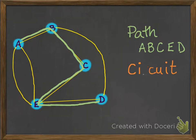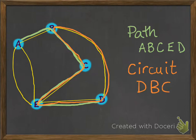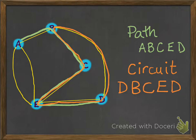We could also have a circuit, which is a path that is closed — it makes a loop. For example, this one here is a circuit: D, B, C, E, D. Because it goes back to D, we need to include that at the end to show that it's a circuit. It goes from D to B to C to E and back to D.